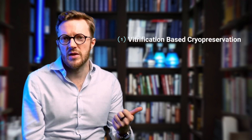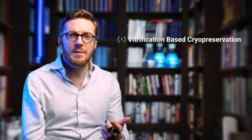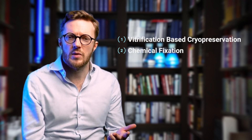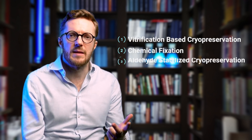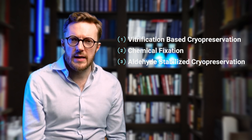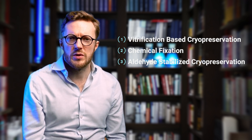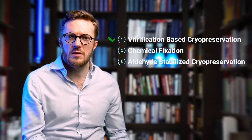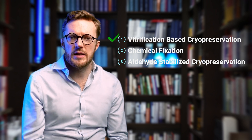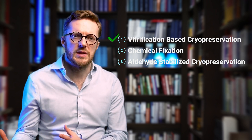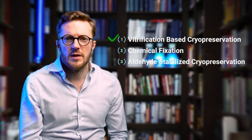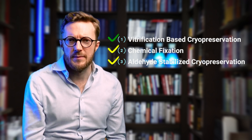So these are the three main methods of preservation: vitrification-based preservation — what is usually called cryopreservation — chemical fixation, and the combination of the two, aldehyde-stabilized cryopreservation. Most organizations are currently using vitrification-based methodology, and under certain circumstances, other types of preservation are used.